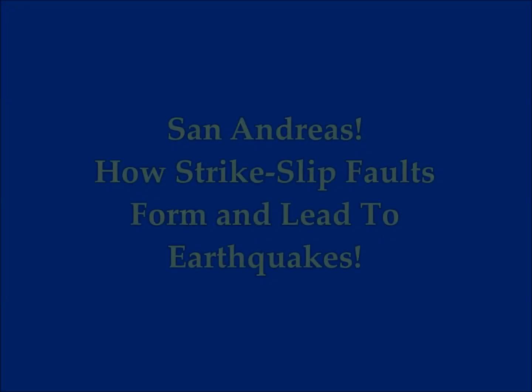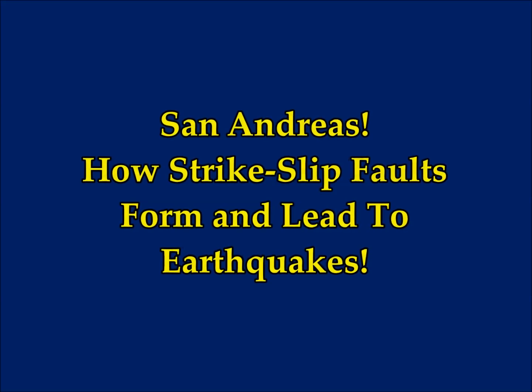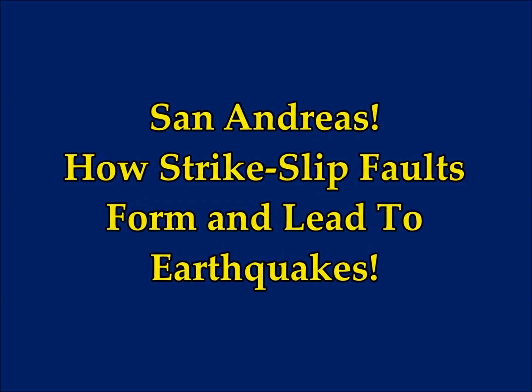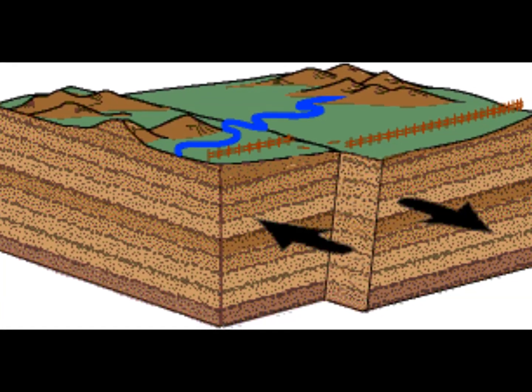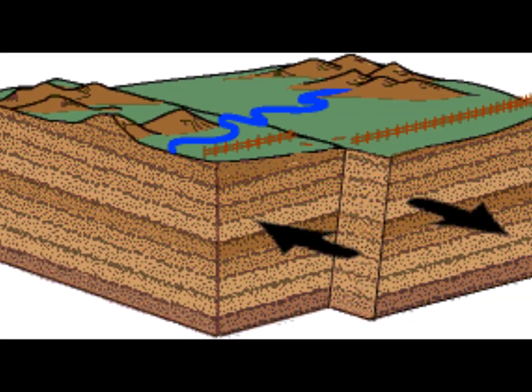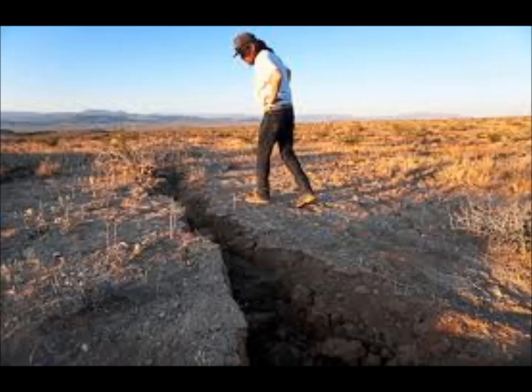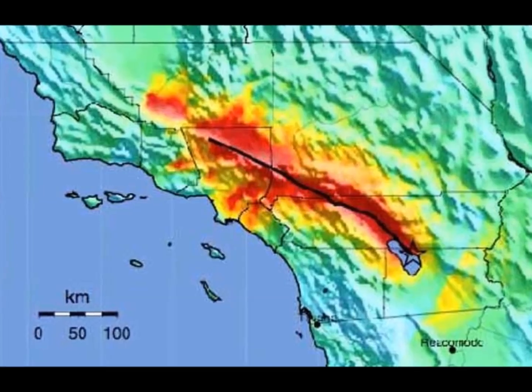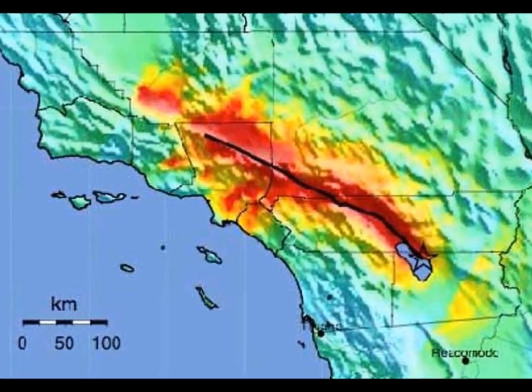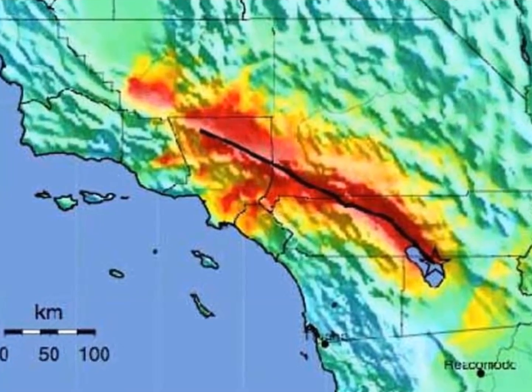San Andreas Fault: how strike-slip faults form and lead to earthquakes. This is by Janet Lathrop, University of Massachusetts at Amherst, on phys.org. Structural geologist Michelle Cook calls it the million-dollar question that underlies all work in her laboratory — what goes on deep in the earth as strike-slip faults form in the crust. This is the fault type that occurs when two tectonic plates slide past one another, generating the waves of energy we sometimes feel as earthquakes.